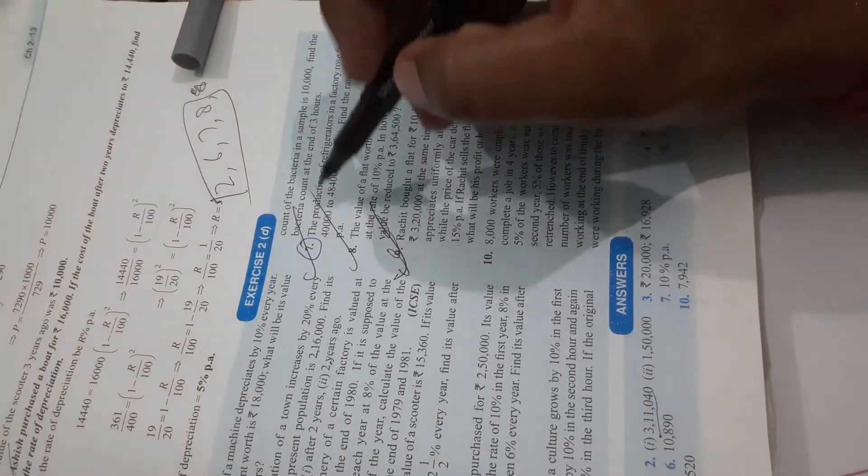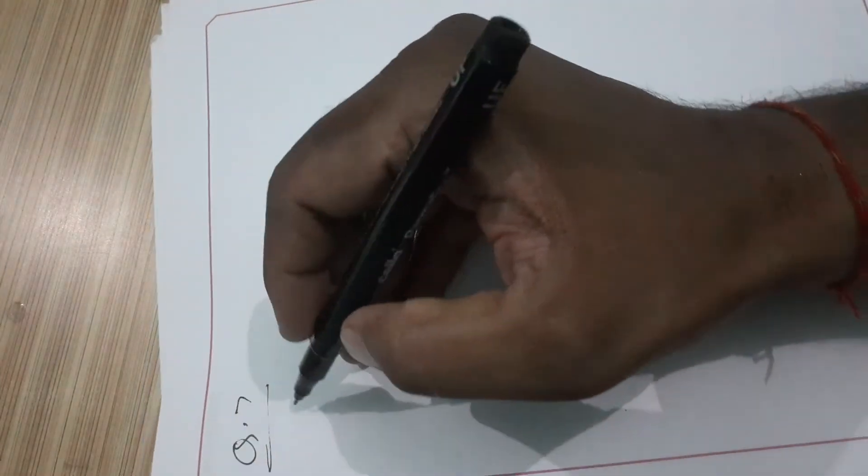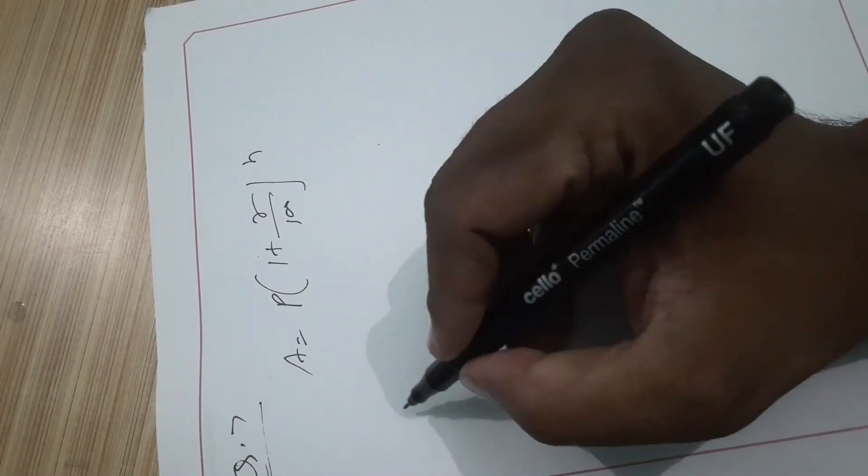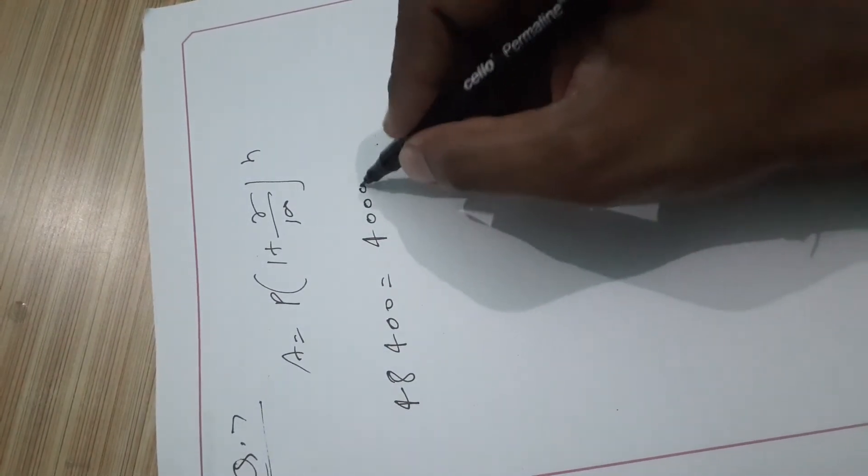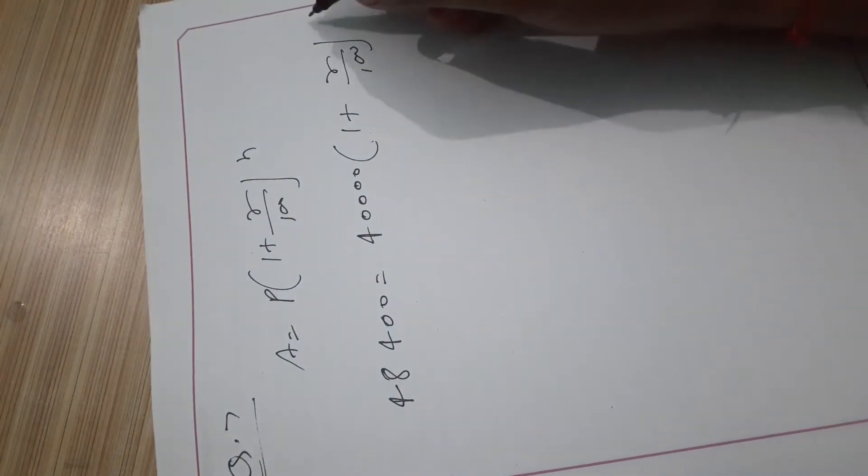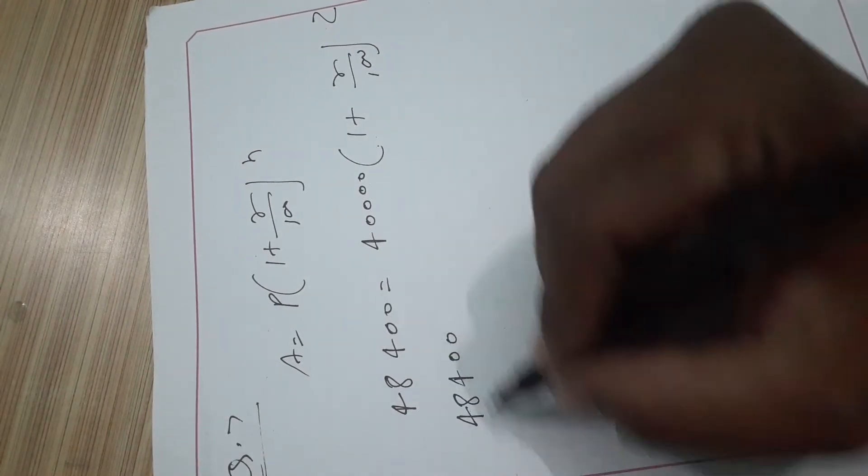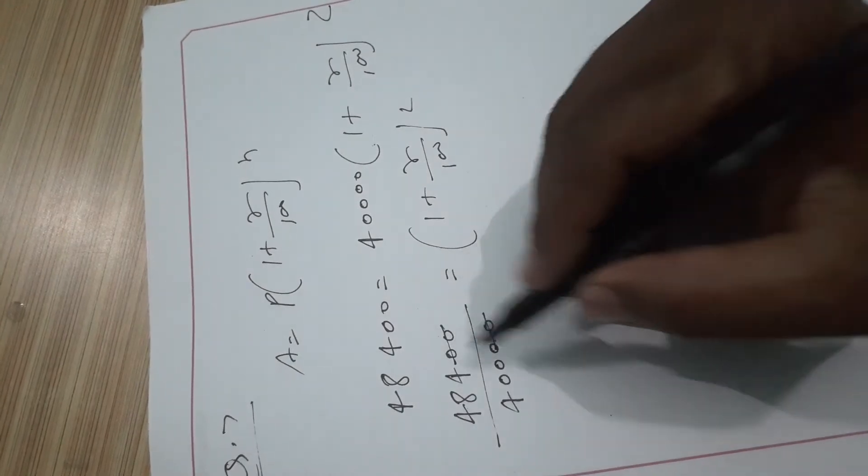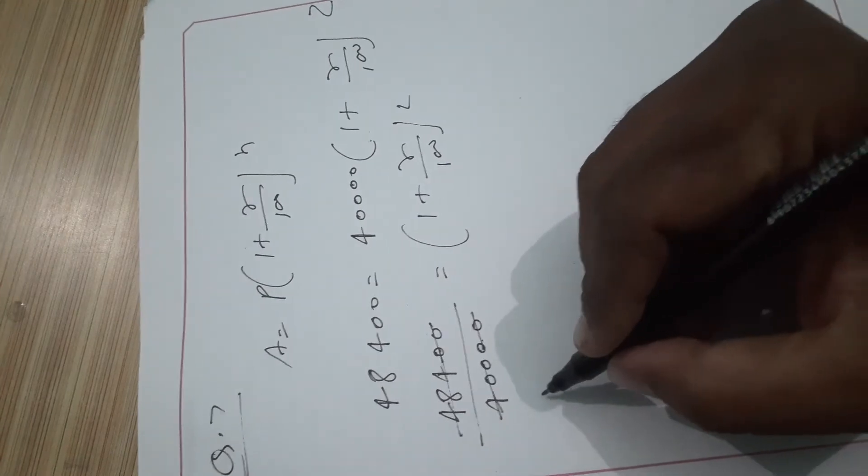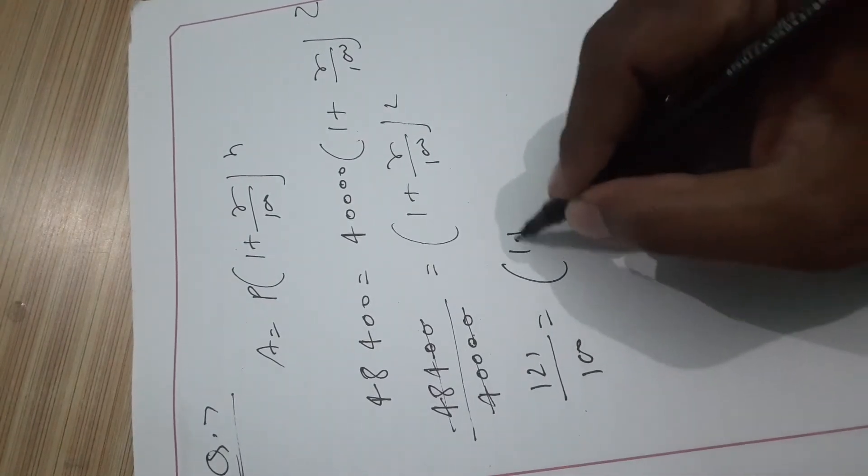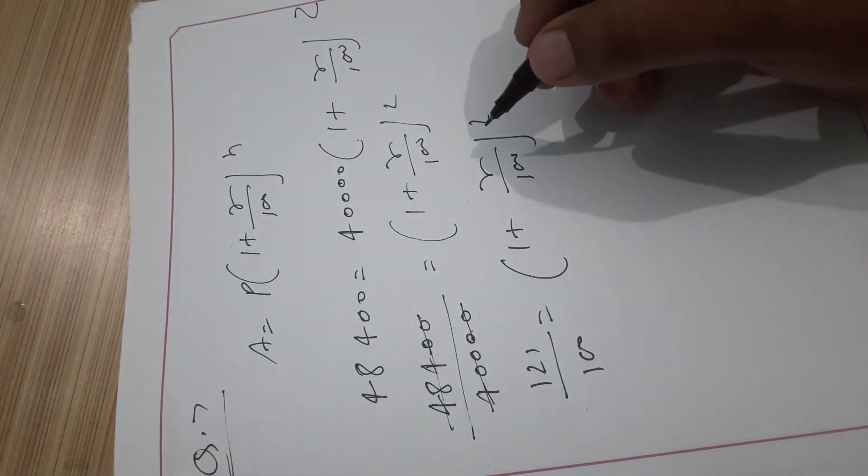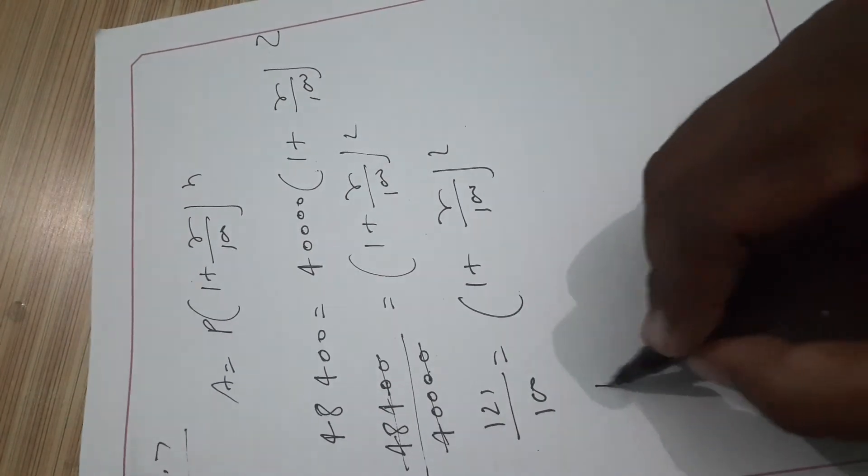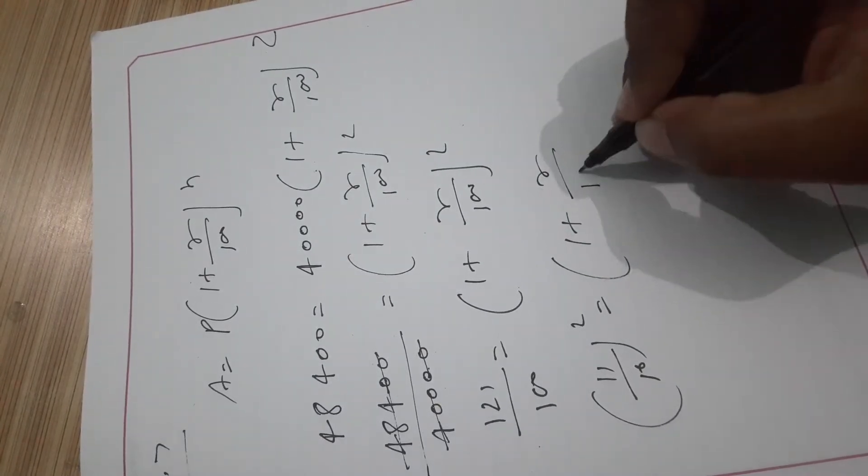Question number 7: The production of refrigerators. A equals P(1 plus R/100) to the power n. 48,400 equals 44,000 times (1 plus R/100) squared. After calculation: 121/100 equals (1 plus R/100) squared. Taking square root: 11/10 equals 1 plus R/100. Comparing: 11/10 minus 1 equals R/100.